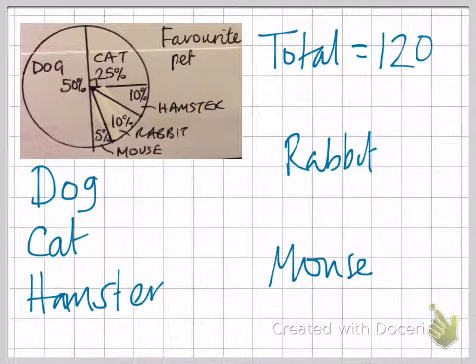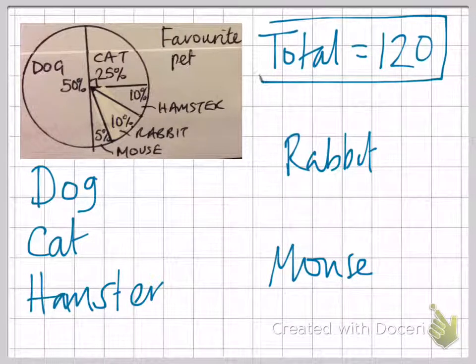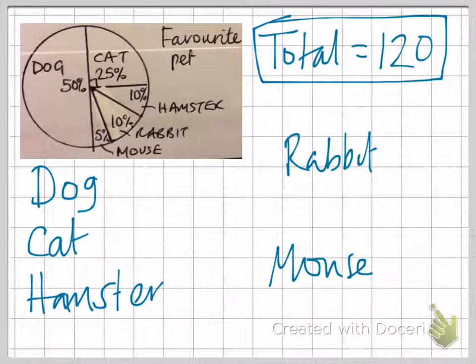We've got dogs, cats, hamsters, rabbits, and mice with different proportions in most of them. If we're told what the total number of children is that have been interviewed about this, we can then work out how many people voted for each of the different pets.